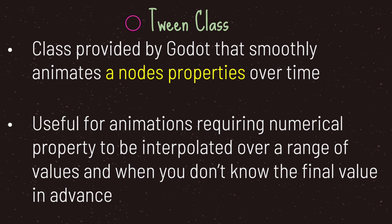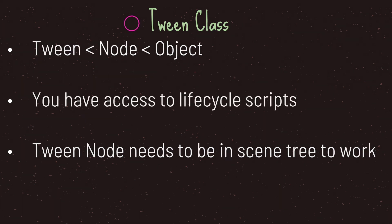The tween class is provided by Godot and smoothly animates a node's properties over time. It's useful for animations requiring a numerical property to be interpolated over a range of values when you don't know the final value in advance. The tween class inherits from the node class which inherits from the object class, meaning we have access to lifecycle scripts.